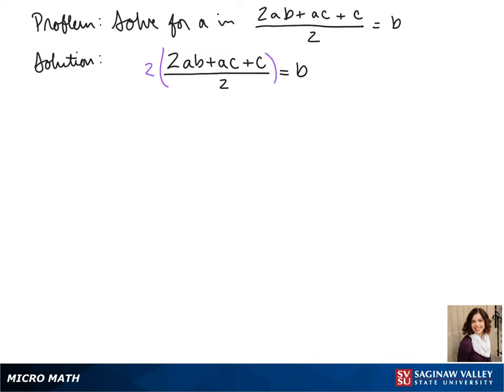Our first step will be to get 2 to the other side, so we multiply both sides by 2, and we get 2AB plus AC plus C equals 2B.